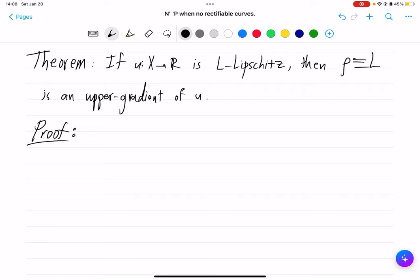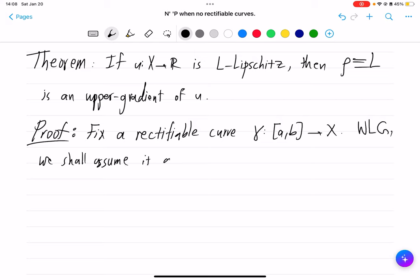Well, we have to fix an arbitrary rectifiable curve. So fix a rectifiable curve γ from [a,b] into X. Without loss of generality, we shall assume it is arc length parameterized. And then, okay, so we have that the integral of this ρ over γ dS will be the integral of the constant function L over γ dS. So this will be just equal to L times the length of the curve γ.